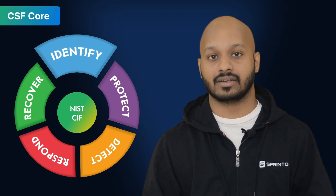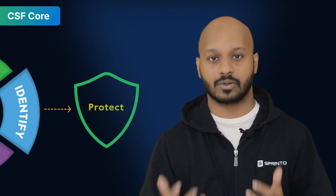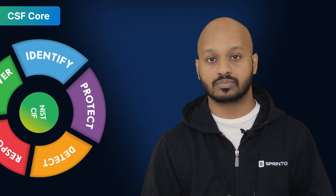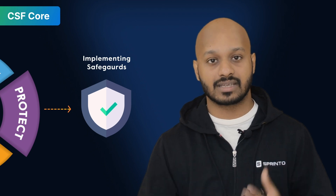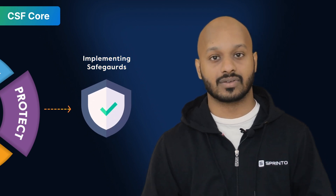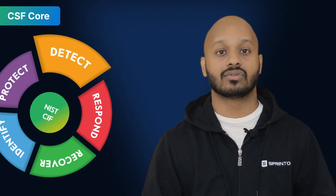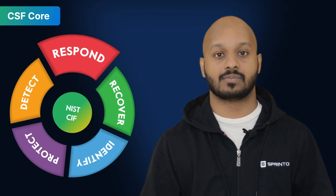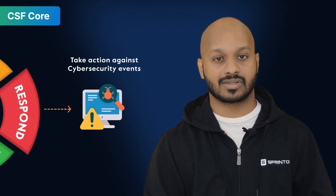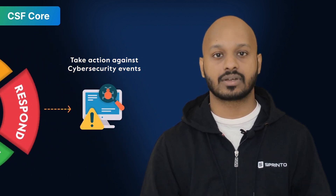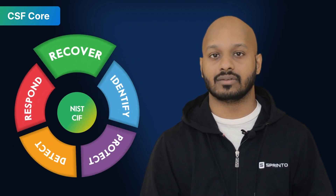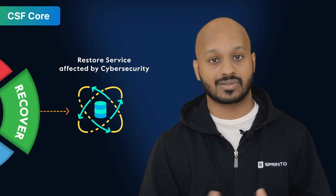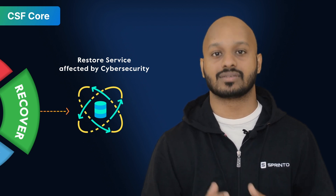The first function of the Core is Identify — understanding all the things that need protection: your systems, people, assets, data, and capabilities. Two is Protect, which involves developing and implementing safeguards to ensure these critical services are not disrupted. Three is Detect, which involves implementing strategies to identify any possible cybersecurity event. Four is Respond, dealing with implementing processes to take action in the event of a detected cybersecurity incident. And finally, five is Recover — developing and implementing appropriate activities to maintain plans for resilience and to restore any capabilities or services that were impaired during a cybersecurity incident.